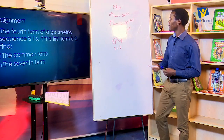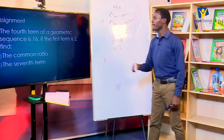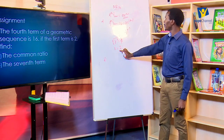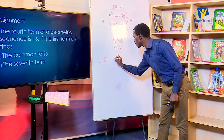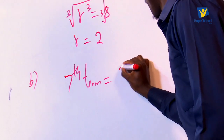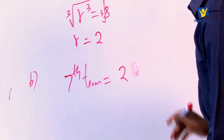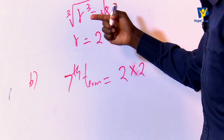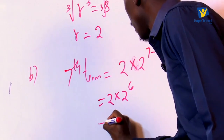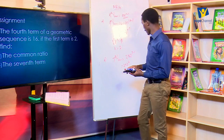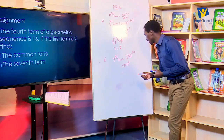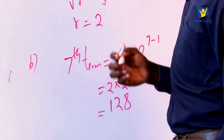After getting the common ratio, that is part A. Part B asks us to get the seventh term. For the seventh term, we substitute n with 7. The seventh term equals a times r raised to n minus 1, which is 2 multiplied by 2 raised to 6, giving us 128. So the seventh term is 128 in this geometric sequence.